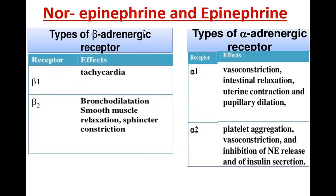The other potent vasoconstrictors are epinephrine and norepinephrine. Epinephrine acts on both alpha-adrenergic receptors and beta-adrenergic receptors, but norepinephrine acts only on beta-adrenergic receptors. This is also asked as an MCQ: epinephrine acts on alpha-adrenergic as well as beta-adrenergic receptors, whereas norepinephrine acts only on beta-adrenergic receptors.